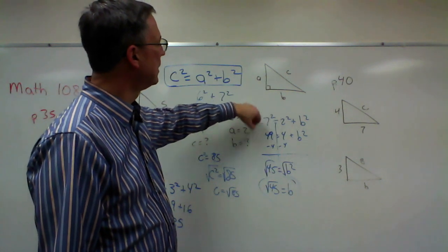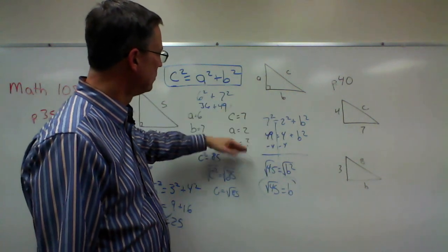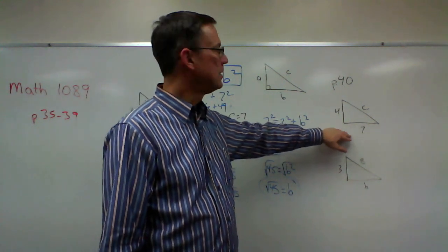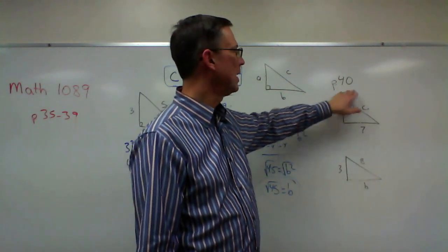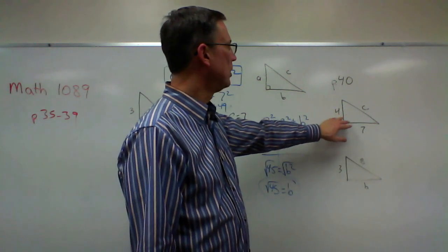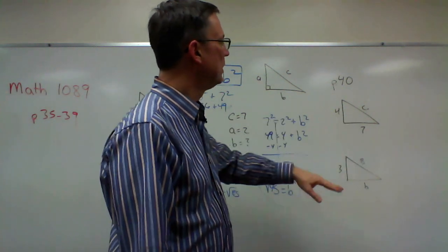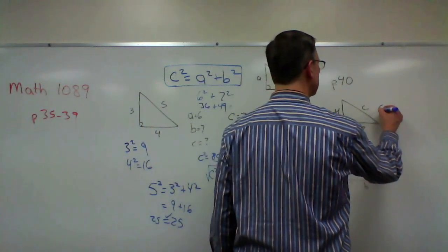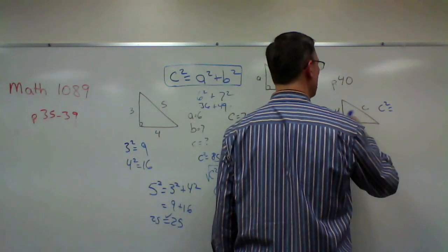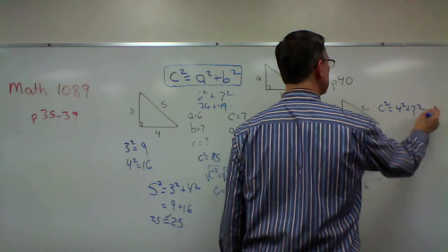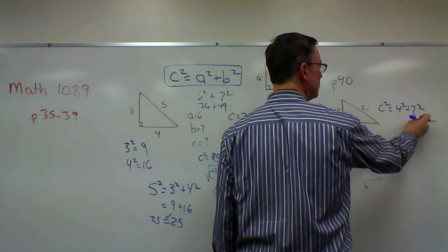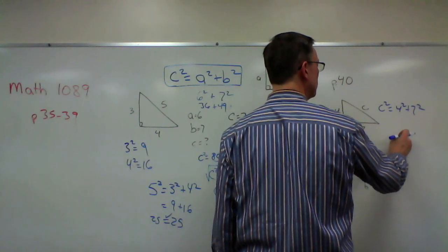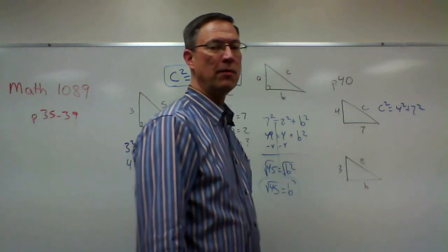So sometimes they give us the numbers in a format like this. Other times, they show us a picture. And say, solve for C. That's what happens here on page 40. We have a picture of a right triangle. So we need to recognize this is the hypotenuse. And so this squared will equal 4 squared plus 7 squared. So that's easy. Solve these two, add them together, and then for the final answer, do the square root of that sum.